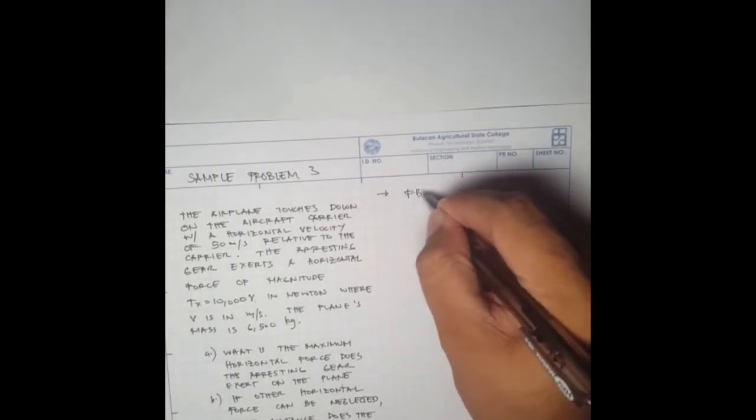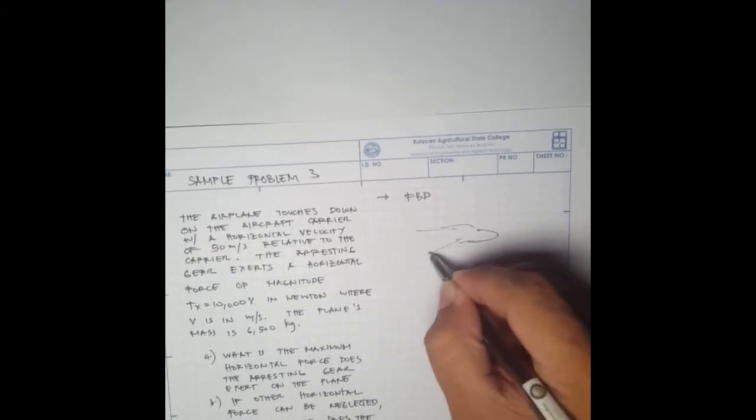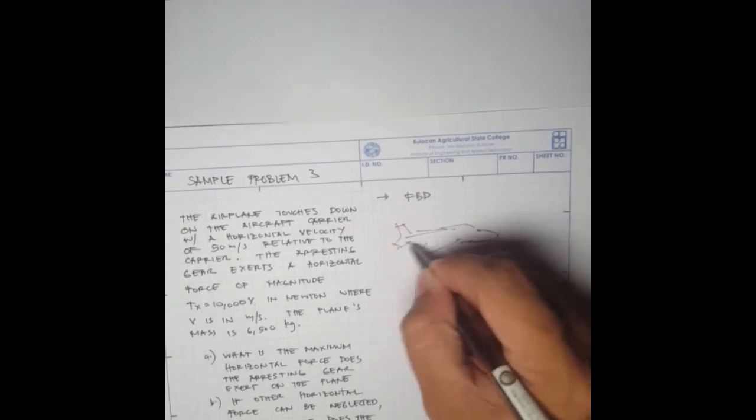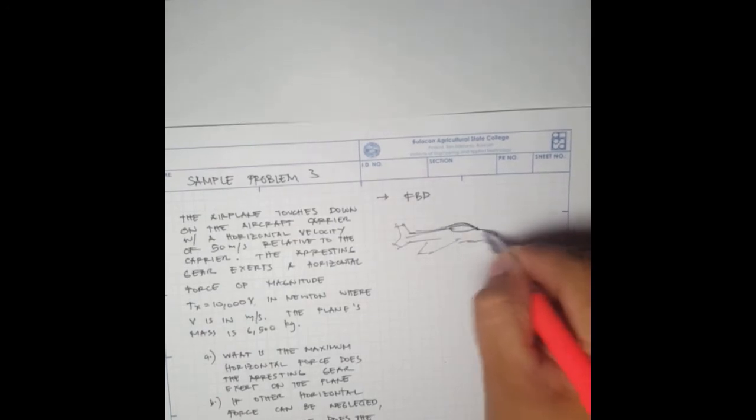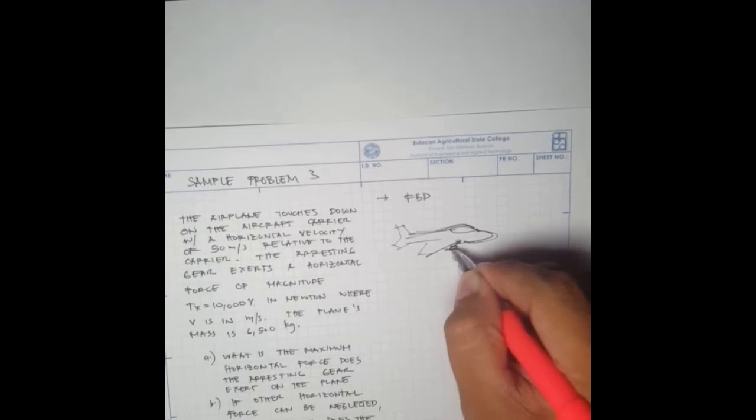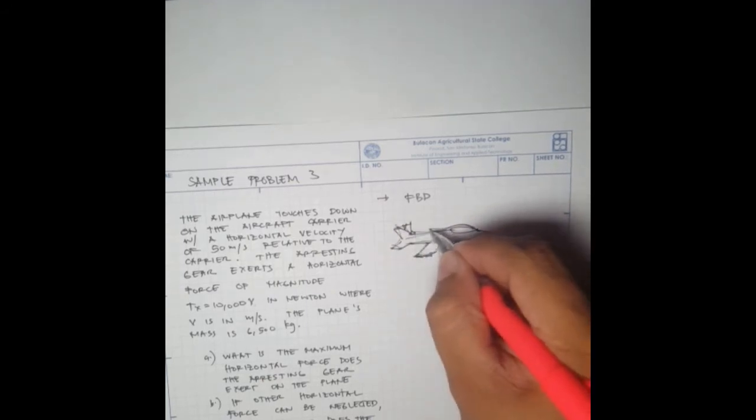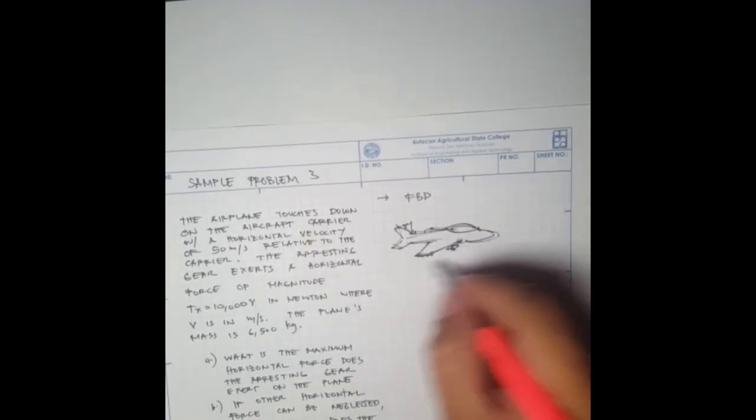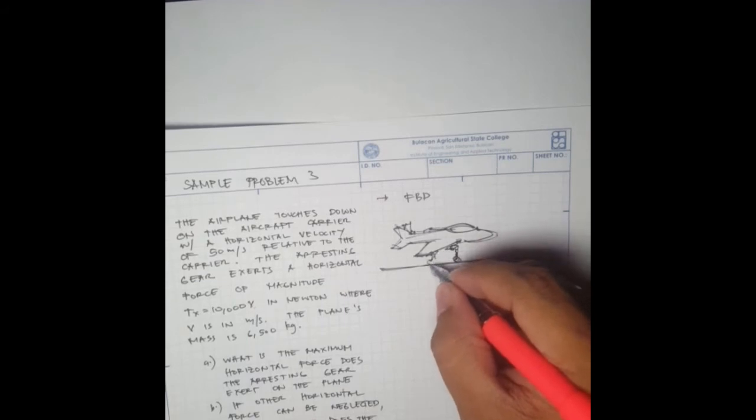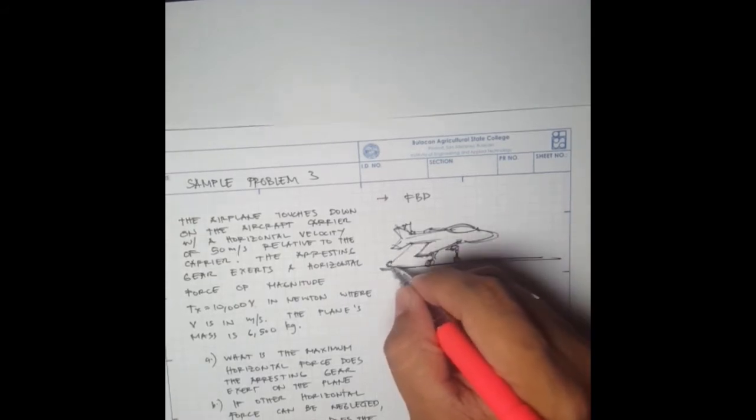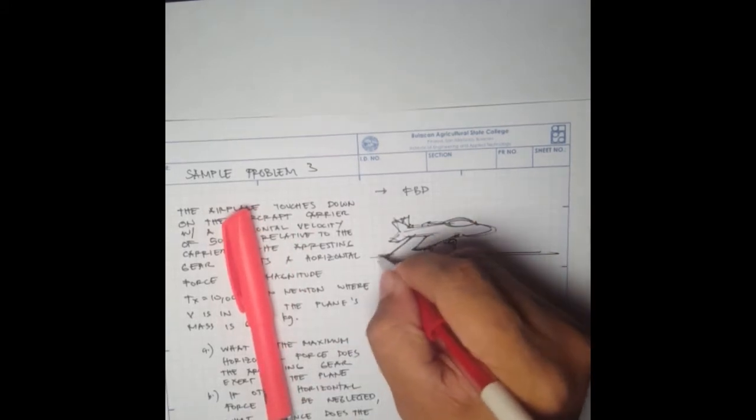Let's draw the free body diagram. That's the plane, we have the landing platform, and these are the wheels, and this is the arresting gear that we have.